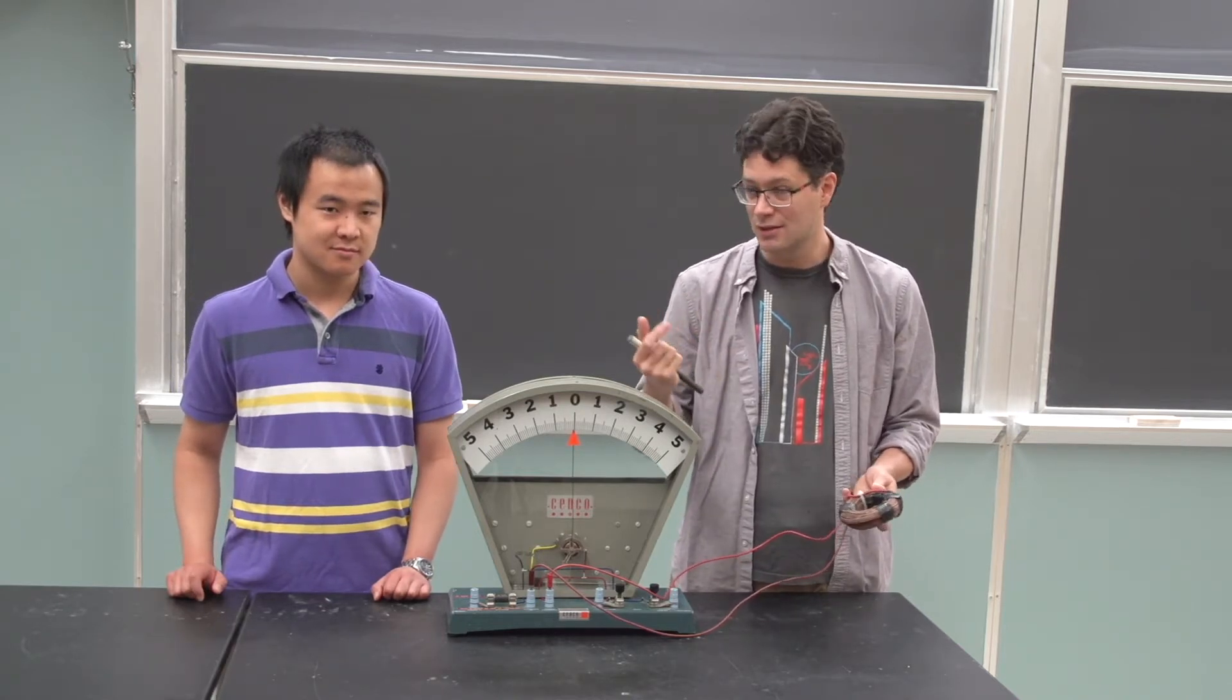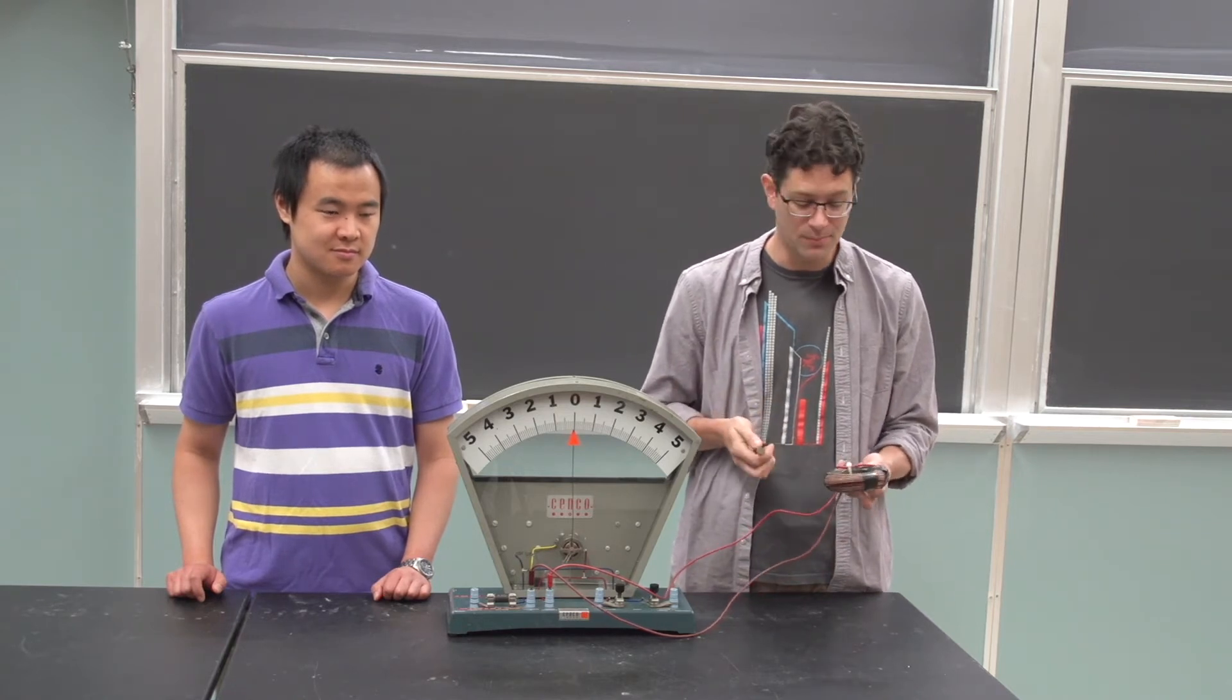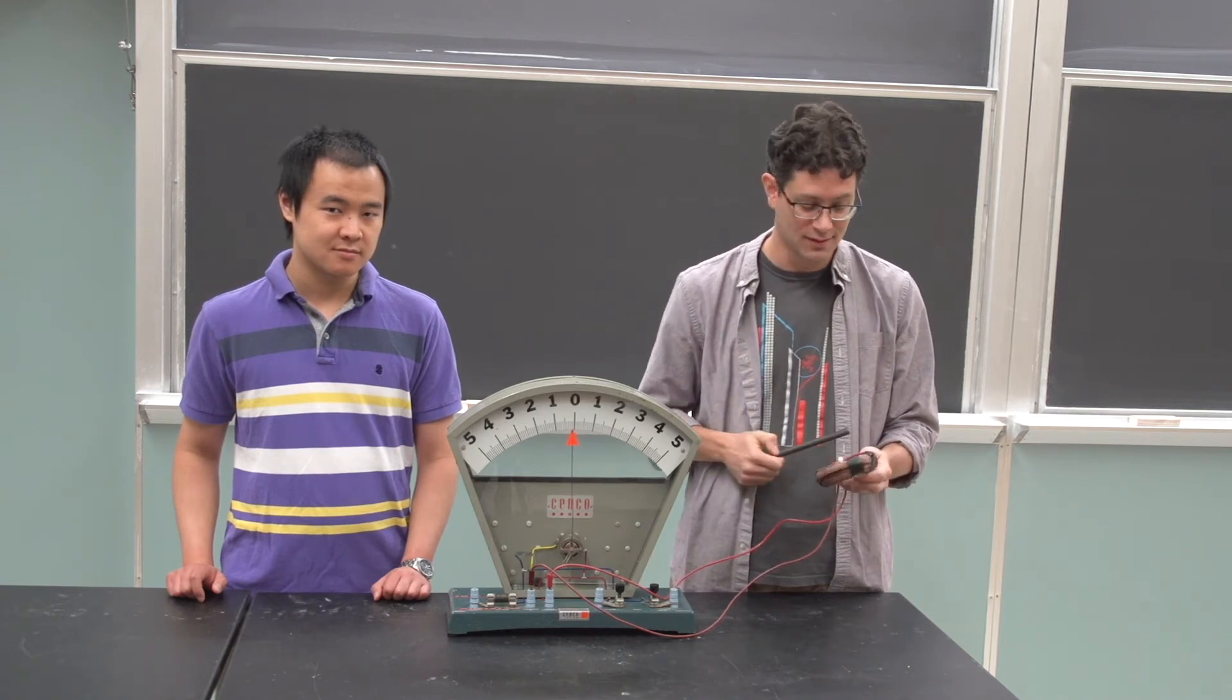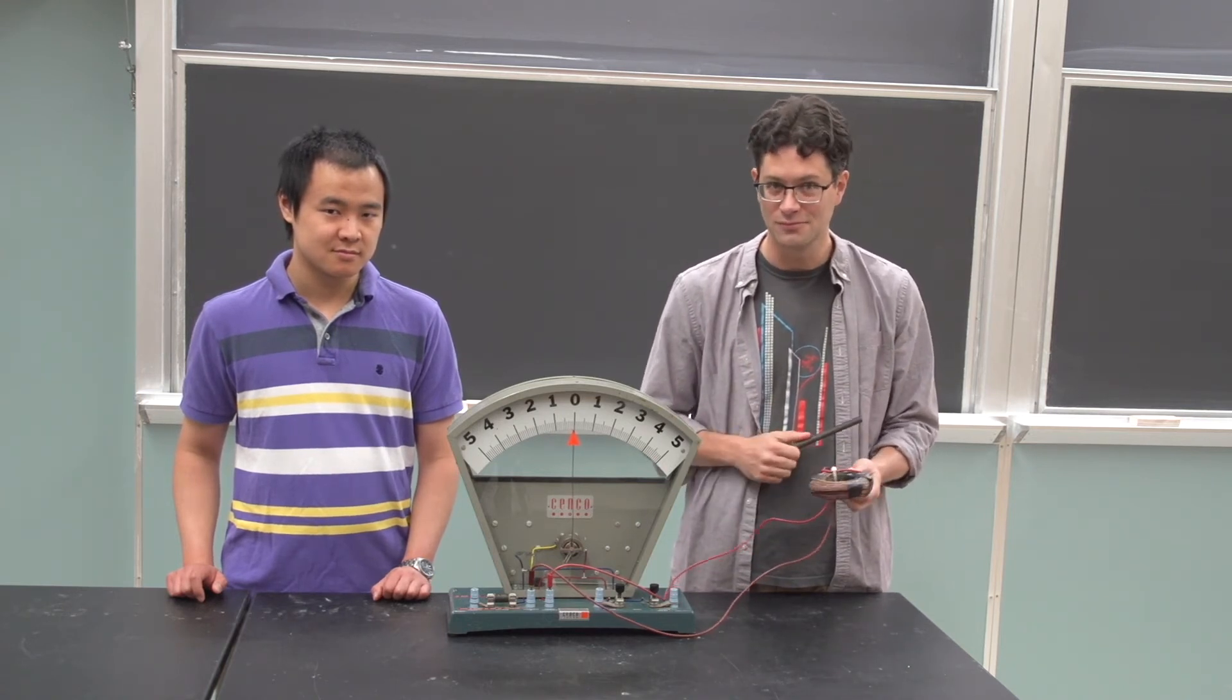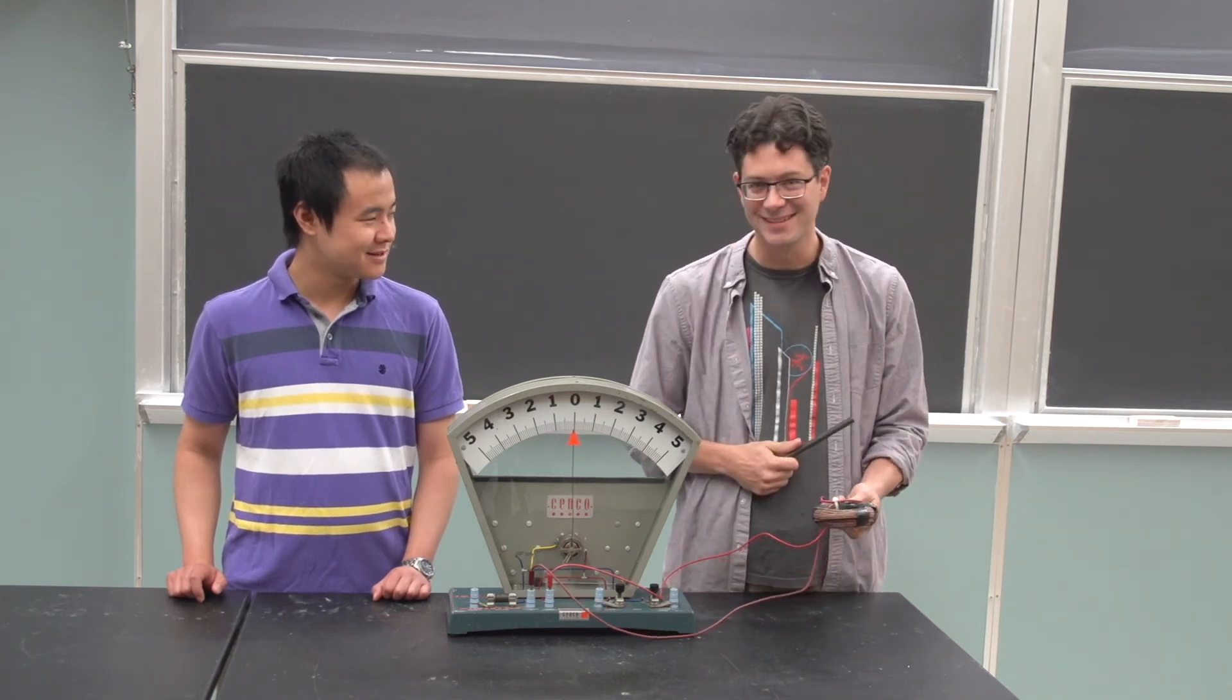But that actually is the current that we get in our power supplies. This is what we get from the power companies. And essentially that's how many power companies generate currents. They just move a magnet near a bunch of wires. And that's how you get power. So we don't need batteries. We just need magnets.